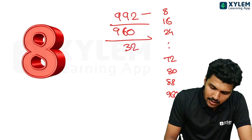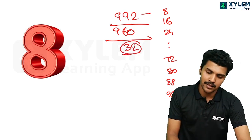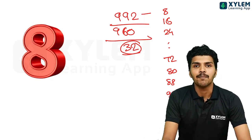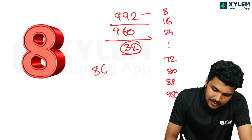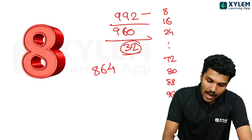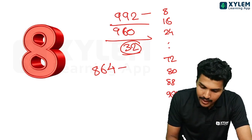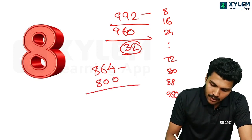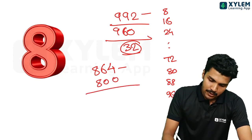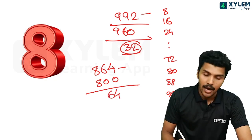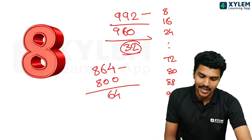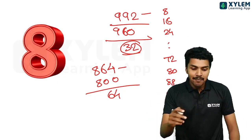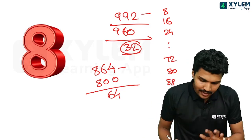32 is a multiple of 6, so 992 is a multiple of 6. If you look at 864, that's how it works. How many times do you multiply? 64 is a multiple. How many times do you multiply? 64 is a multiple.